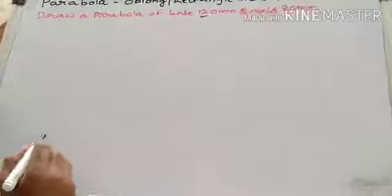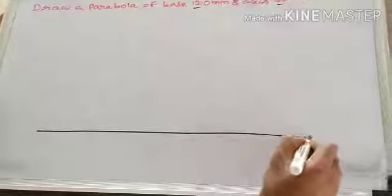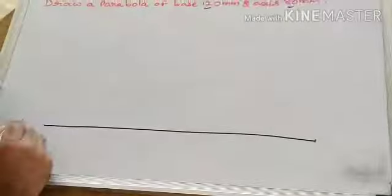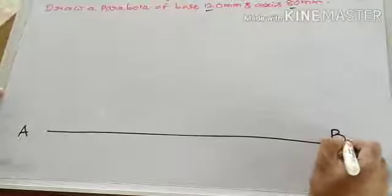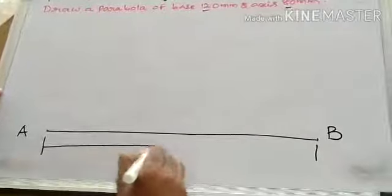First draw a horizontal line base 120 mm. I am naming it as AB. This is 120 mm.